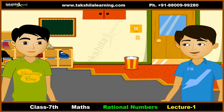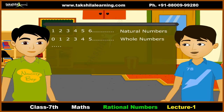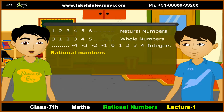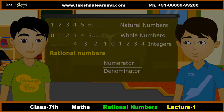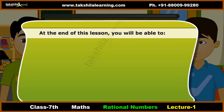Introduction: Rahul asks Amit what he is learning. Amit explains their maths teacher taught them a new topic — rational numbers. Rahul knows about natural numbers, whole numbers, and integers, but not rational numbers. Amit begins: these numbers are in the form numerator by denominator, where the numerator is either 0 or a positive integer and the denominator is a positive integer.